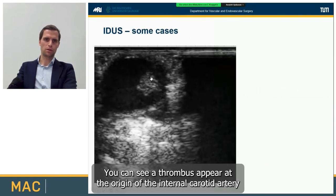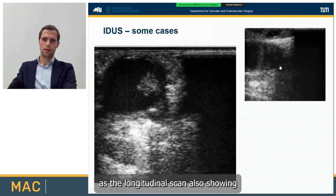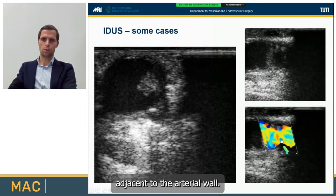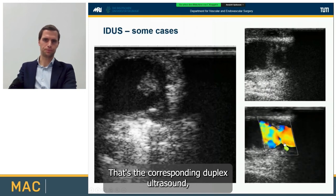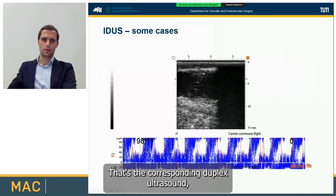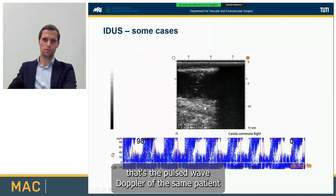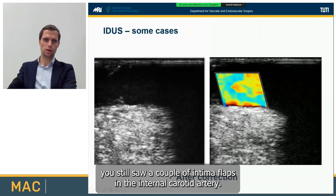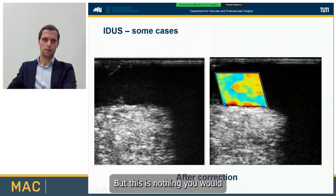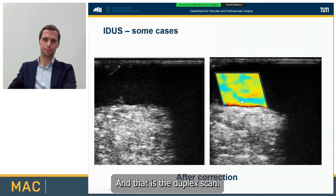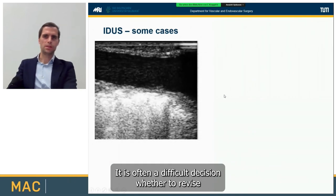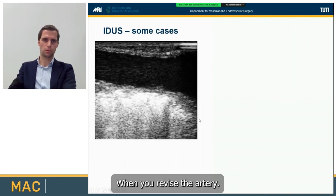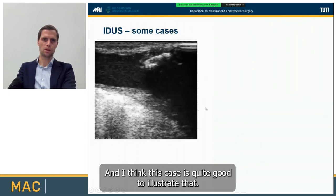Here you can see a thrombus at the origin of the internal carotid artery. The longitudinal scan also shows thrombotic material adjacent to the arterial wall. That's the corresponding duplex ultrasound and pulsed wave Doppler. It is often a difficult decision whether to revise and correct a defect, because you can also make things worse when you revise the artery.